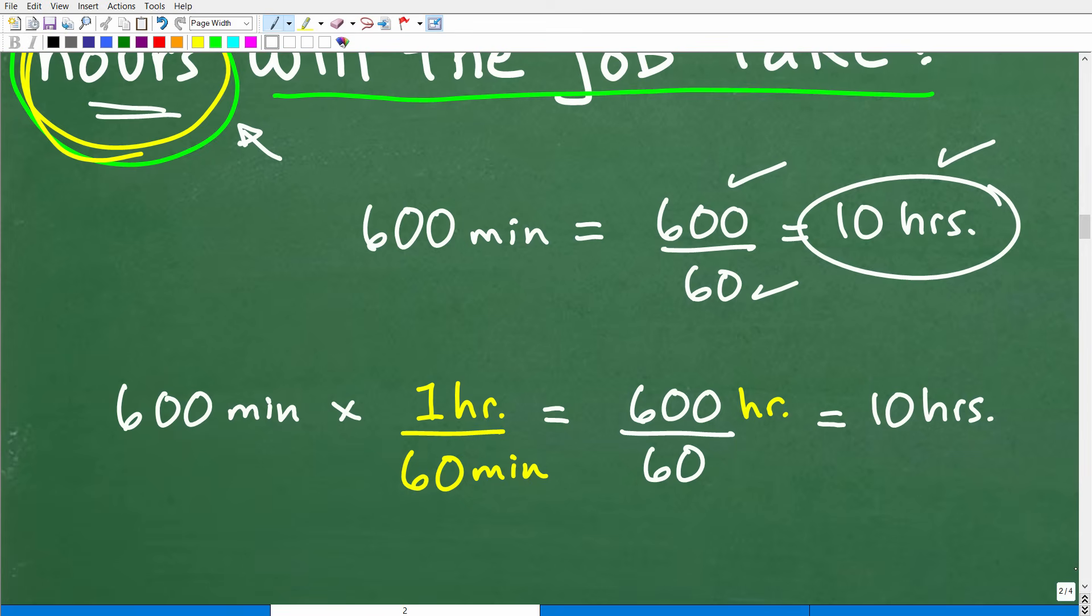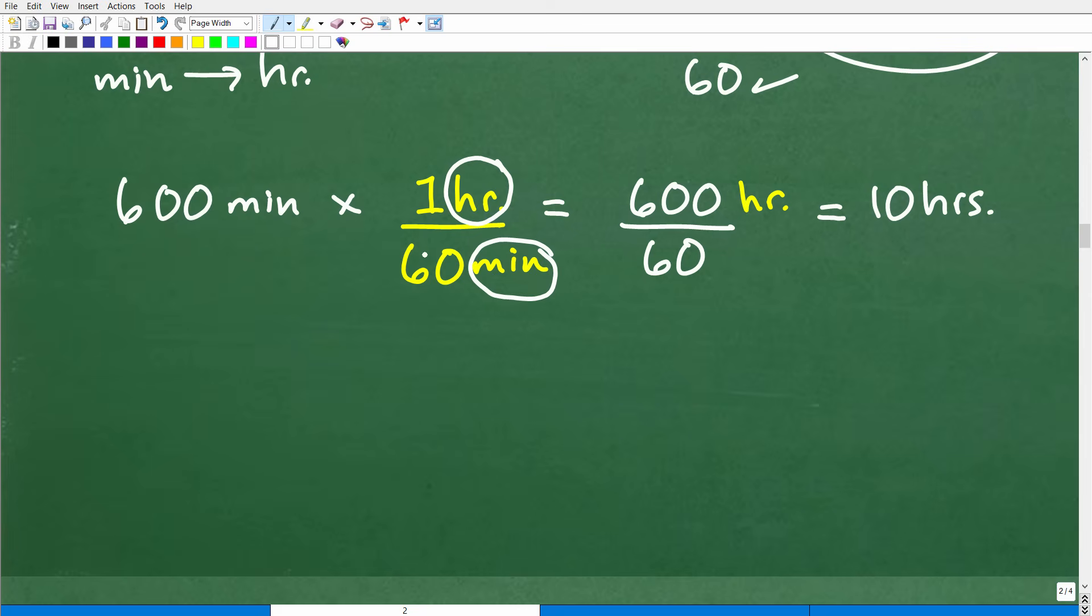But let's take a closer look at converting units of measure because this is important. Although this example is pretty easy, what's technically going on here is we have 600 minutes. We want to go from minutes to hours. So anytime you're converting any unit of measure, you want to know what we would call a conversion factor. So the conversion factor that we want to use here is one hour per 60 minutes, or one hour to 60 minutes. We can express this as one hour to 60 minutes or 60 minutes to one hour. We call these conversion factors.